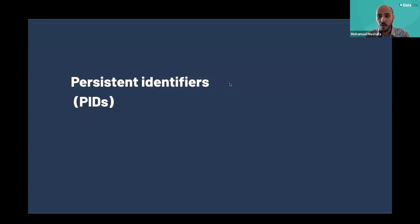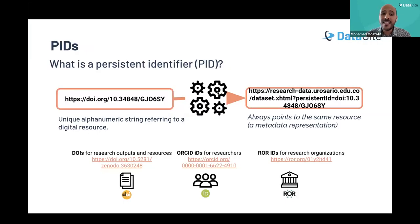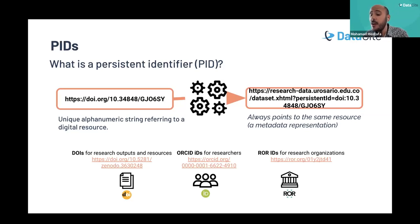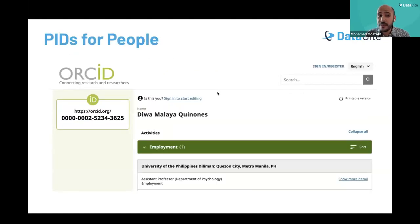One of our important initiatives is the Global Access Program, which I'll highlight shortly. But first, a quick introduction to persistent identifiers. A PID is a unique alphanumerical string referring to a digital resource, and that digital resource will have a landing page with a metadata representation. There are three different types of PIDs: those assigned for objects such as research outputs and resources — the most famous example being the digital object identifier or DOI; those assigned for people like academic researchers and contributors, such as ORCID ID; and those assigned for organizations or places, such as the ROR ID.